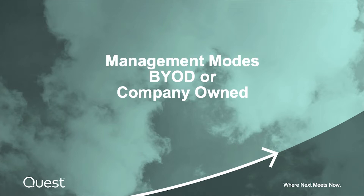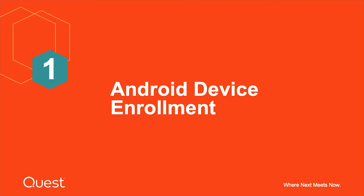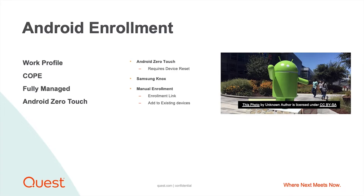Let's talk about Android device management. There are a number of styles of management for Android devices. First, we'll talk about the work profile — this is typically for the bring your own device mode of management. When you enroll that device, the end user is already using it, but you want to have some control or management to secure your company's data and give the user access to the tools they need. They'll typically click on an enrollment URL, walk through a wizard, and a profile will be put on that endpoint. They'll enter their work email, their passcode, and accept the terms and conditions.